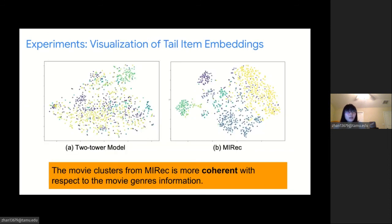We also explore the learned representations of tail items in MIREC and the backbone two-tower model. Here is the 2D visualization of tail items on the MovieLens 1 million dataset, where color represents the movie genres. Compared with the two-tower model's tail item embedding on the left-hand side, the movie clusters from MIREC on the right-hand side are more coherent with the movie genre information.